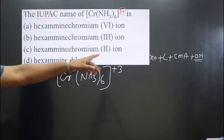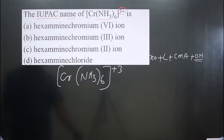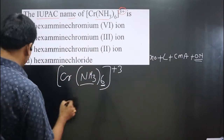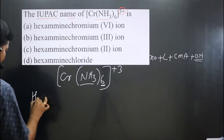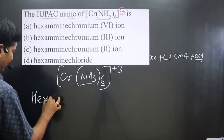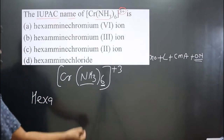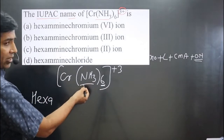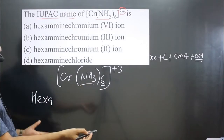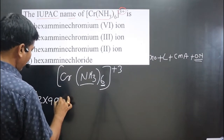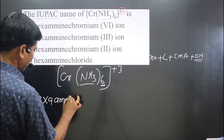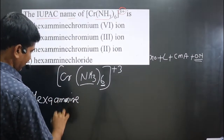First, the number of ligands — only one type of ligand is there. How many? 6 are there, so we write 'hexa'. Then we have ammonia, which is a neutral ligand, and we name it as 'amine'. So we get 'hexaamine'.